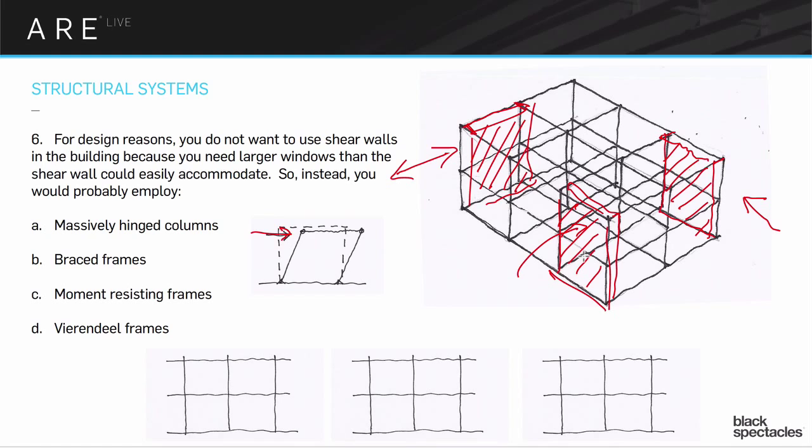The shear wall is out because we just said we can't fit great big windows in there easily. So what are my other choices? Well, I could use what's referred to as a braced frame. I could use that. That's actually a pretty good answer. In that situation, I might be thinking of big diagonals. It could be like that.